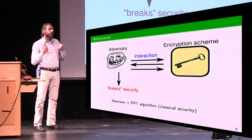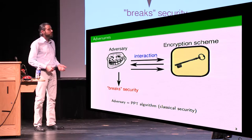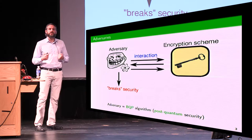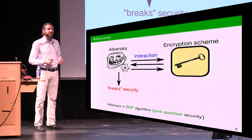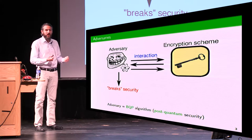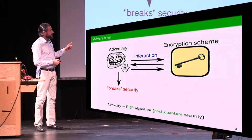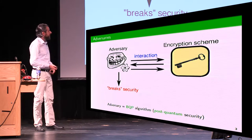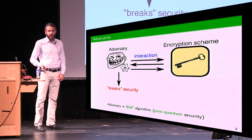When we look at the security of the schemes against quantum adversaries, what we usually do is give the adversary access to a quantum computer. Now we model the adversary as a bounded quantum machine, but the interaction with the scheme is still classical, because the scheme is a classical object. This is usually what we call post-quantum security.